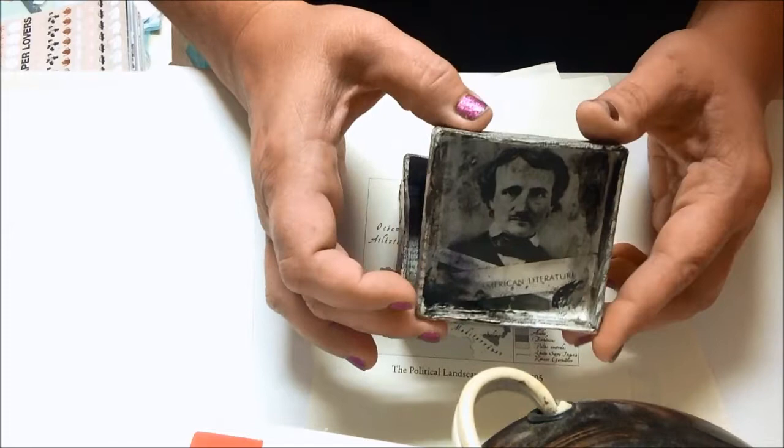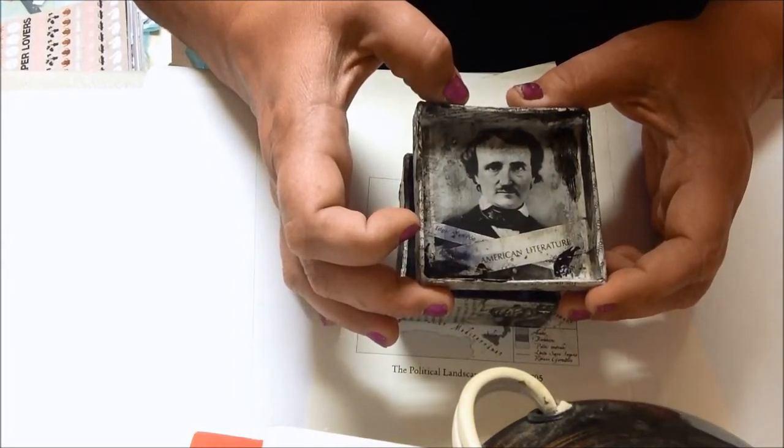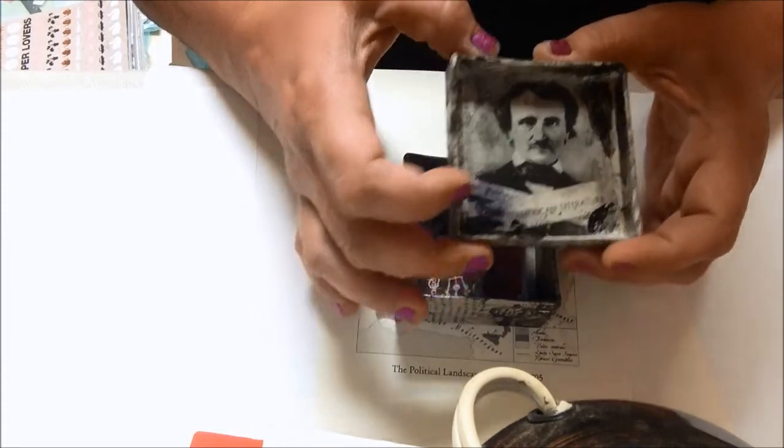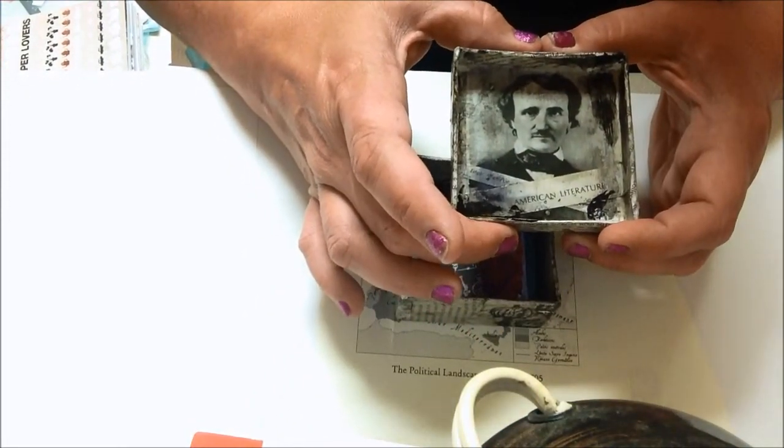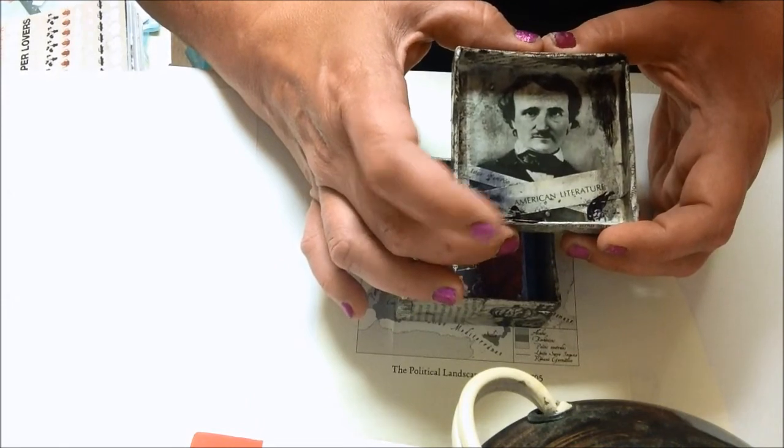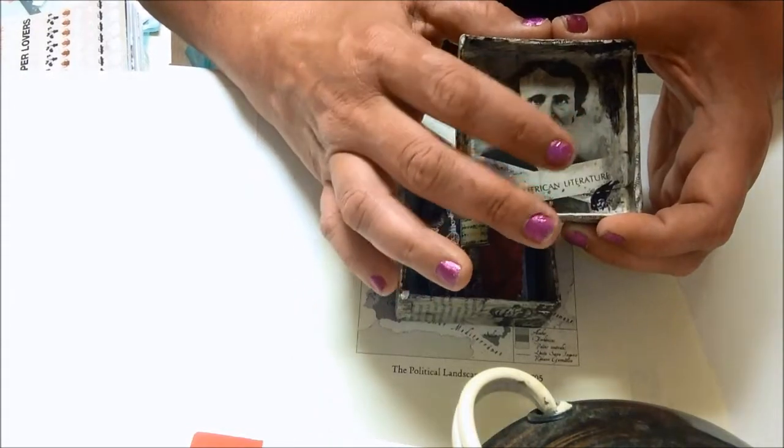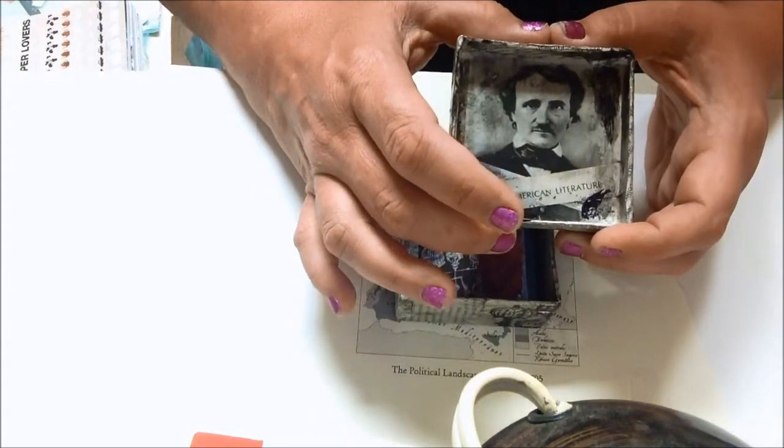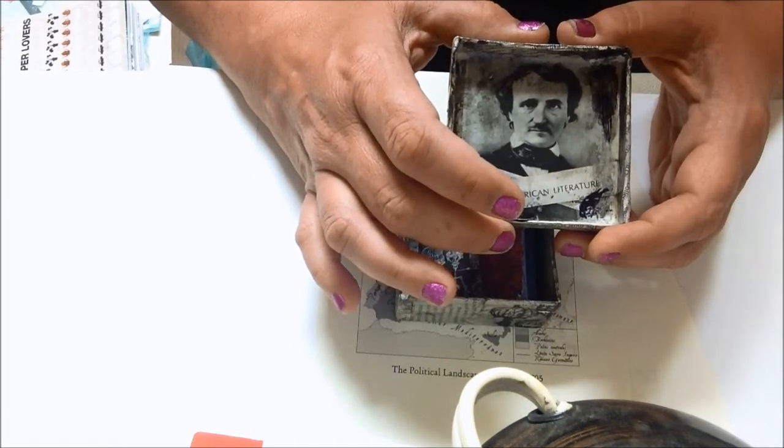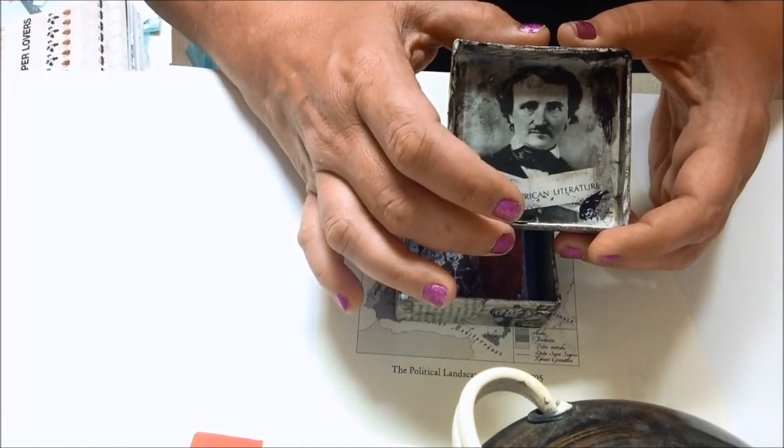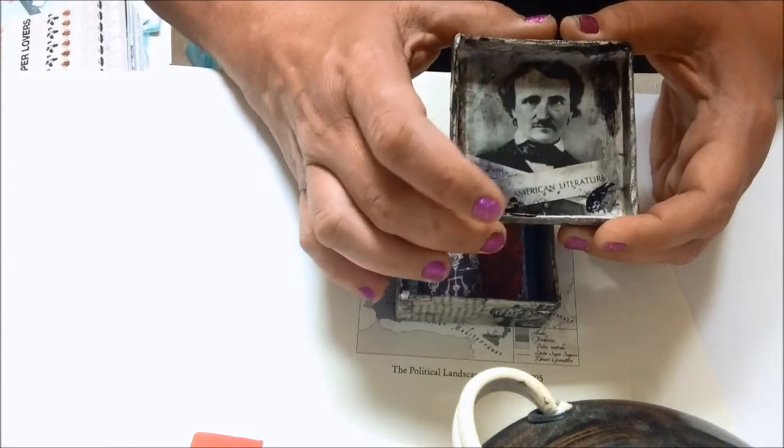As you can see, Mr. American Literature Edgar Allan Poe, in honor of his Raven. And this is actually, my mother just recently gave me a set, the full set from like the 1970s Funk and Wagnall's Dictionary. So that's an actual page from the dictionary.